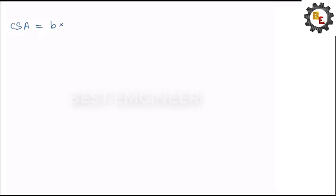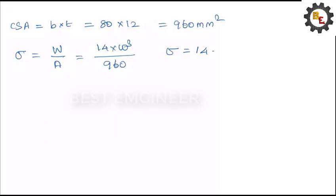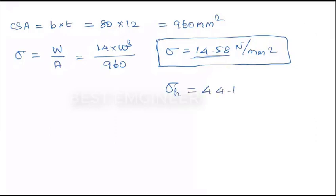We have taken the cross section area. Cross section area of rectangle is B into T. We have breadth of 80 and thickness of 12, so we found the cross section area 960 millimeter square. This area is restricting the load, so the stress equals load by area. Load is 14 into 10 power 3 divided by cross section area 960, so stress produced is 14.58 Newton per millimeter square. If you're not considering the hole, you would expect this stress is produced in the plate. But due to the hole we found the stress 44.19 Newton per millimeter square. You can see the difference between these two stresses.